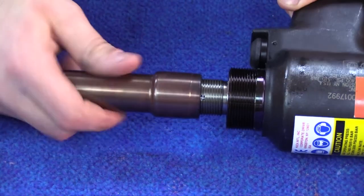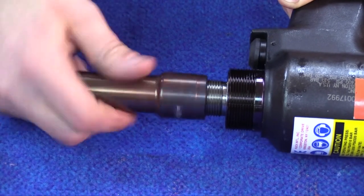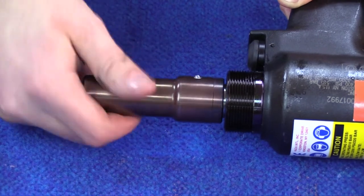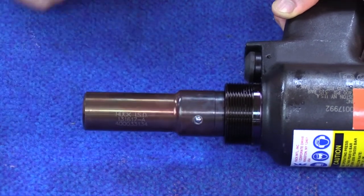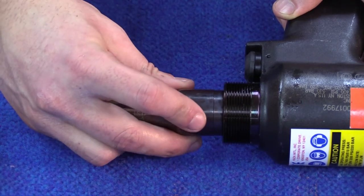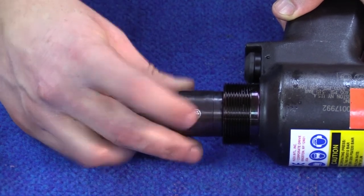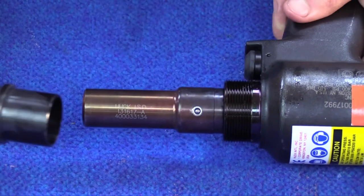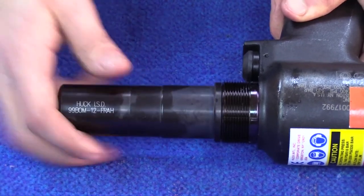Thread the collet completely on. Once bottomed out, place your finger on the ball. Back off collet until ball falls into groove on piston. Slide anvil over collet assembly.